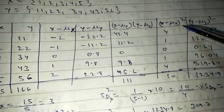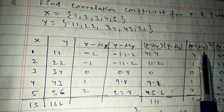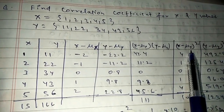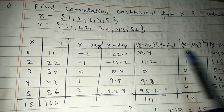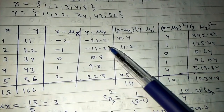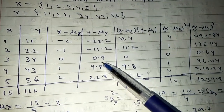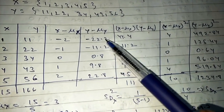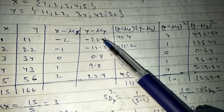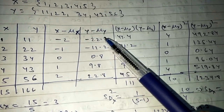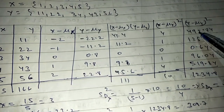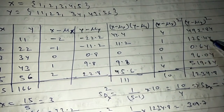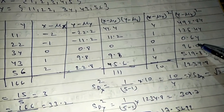Now calculate (x minus μx) squared for each data point: 4, 1, 0, 1, 4. Similarly, (y minus μy) values are -22.2, -11.2, 0.8, 9.8, 22.8. Square each element of y minus μy using a calculator: 492.84, 125.44, 0.64, 96.04, 519.84.